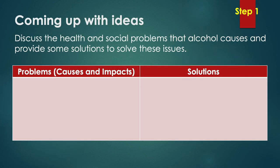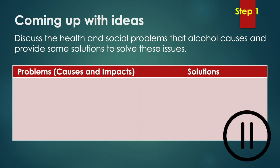Step one: you need to make sure you can come up with enough ideas. We have our title: 'discuss the health and social problems that alcohol causes and provide some solutions to solve these issues.' Can you think of enough ideas — the causes, the effects, and the possible solutions for this question? Pause the video and write down some ideas now.